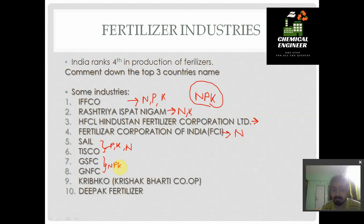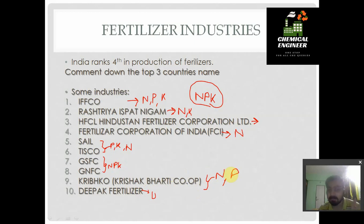GSFC, GNFC, Kripco, and Deepak Fertilizers are all doing well. Deepak Fertilizers produces nitrogenous-based fertilizer, that is urea. Kripco also produces nitrogen-based fertilizer urea, while it also produces some phosphorus-based fertilizers. These are all the top industries for fertilizer production in India.